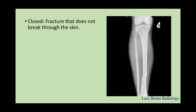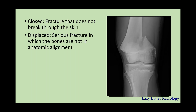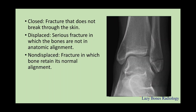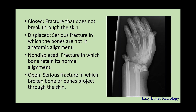A closed fracture does not have a break through the skin — as you can see here, there is a fracture but the skin is intact. A displaced fracture is a serious fracture in which the bones are not in anatomical alignment; for example, the femur is more lateral while the rest of the leg is medial. A non-displaced fracture is one in which the bone retains its normal alignment. An open fracture is a serious fracture in which the bone breaks or projects through the skin.